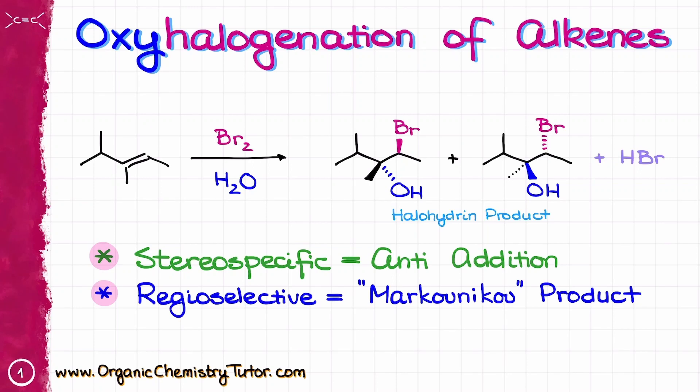Oxyhalogenation of alkenes is a useful reaction that makes halohydrins from alkenes, adding a halide and a hydroxyl group to our substrate in a single synthetic procedure. Its mechanism is similar to halogenation and, just like halogenation, it is very specific as well, giving the anti-product where the OH and the halide are looking in opposite directions.